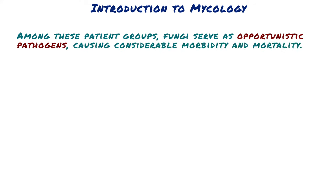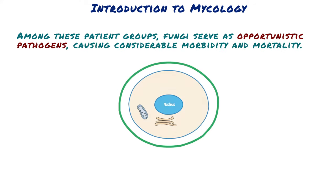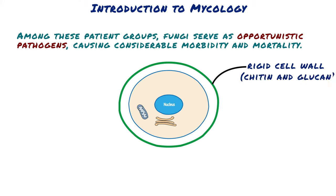They are eukaryotic organisms distinguished from other eukaryotes by a rigid cell wall composed of chitin and glucan, and a cell membrane in which ergosterol is substituted for cholesterol as the major sterol component.